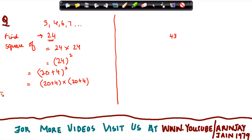Now we know the properties that 20 plus 4 into 20 plus 4 can also be written as 20 into 20 plus 4.